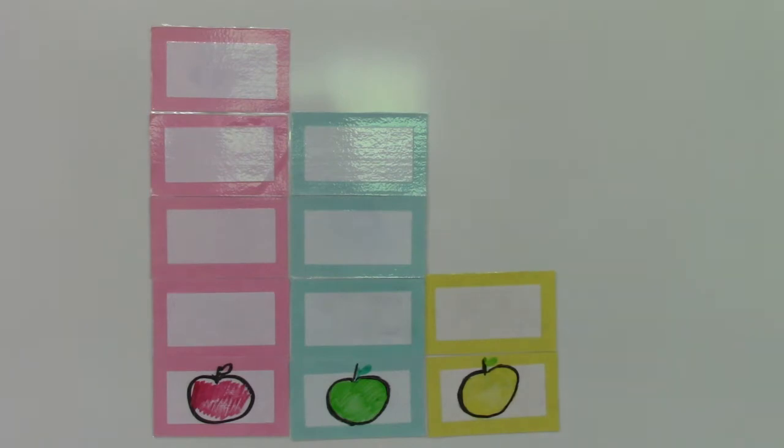Alright class, let's take a look at this graph. Can you see what color apple was the favorite of the most people? Yes, you're right, it is red! How many people liked the red apple? You got it! It's four!